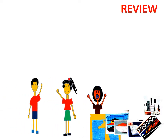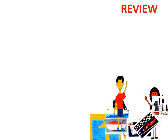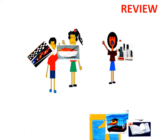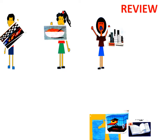Now, one, two, three. Good job. The boys tell me what the picture is about. Race. Good. How about the girl? Cereal. Good. And you? City. Good. Give one point to each of you.